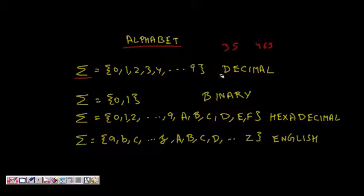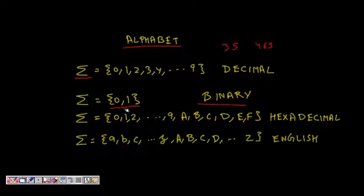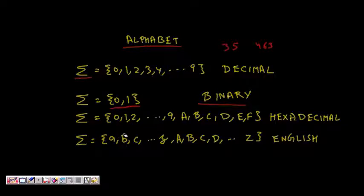For binary numbers, the alphabet sigma is {0, 1}. For hexadecimal, we use 0 through 9 then a, b, c, d, e, f. For English, we have lowercase a through z and uppercase A through Z.